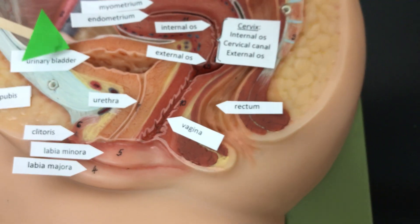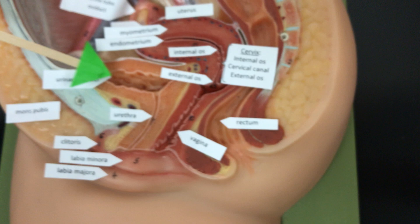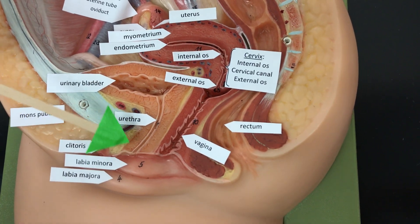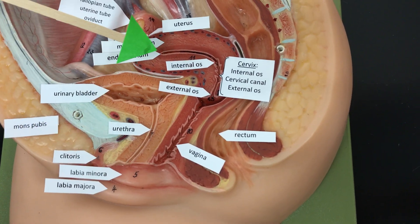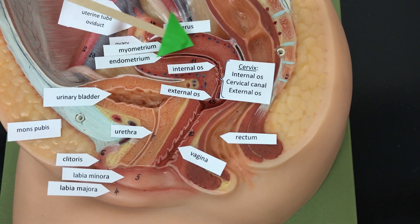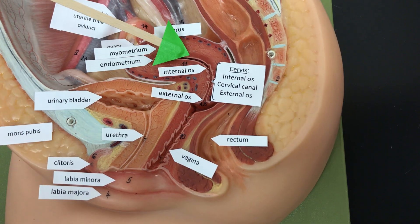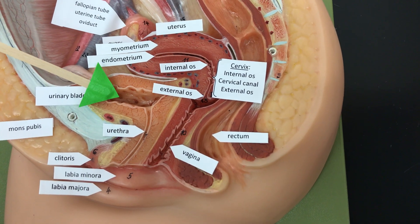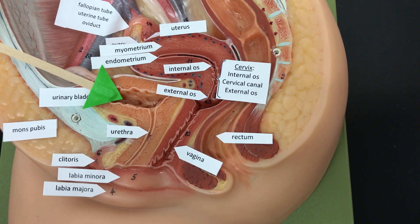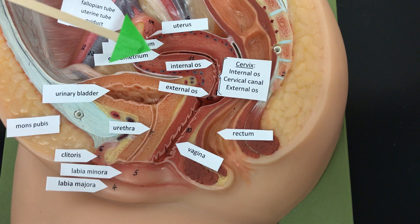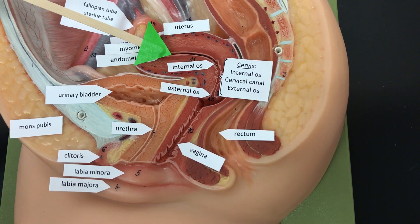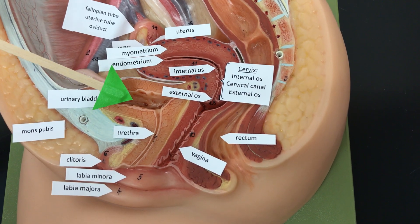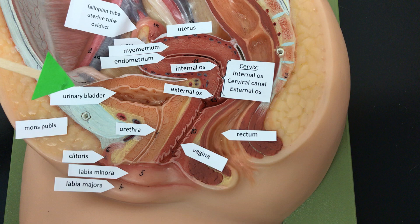On this model we can also see the urinary bladder and the urethra. The baby sits in the uterus and sits on top of the bladder. So if a pregnant woman says she has to go to the bathroom, get her to the bathroom because somebody is squishing her bladder.